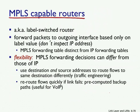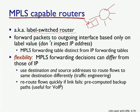A router supporting MPLS is called an MPLS-capable router or Label Switched Router (LSR). An LSR forwards packets to outgoing interfaces based on the label value rather than the IP destination address. This provides flexibility: MPLS forwarding decisions can differ from those of IP routing. For example, using both source and destination addresses to route flows to the same destination along different paths provides traffic engineering — distributing load across different links or routing for privacy reasons.